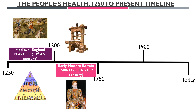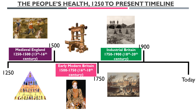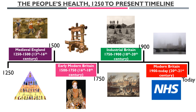The second time period is early modern Britain: 1500 to 1750, the 16th to the 18th century. The third is industrial Britain, from 1750 to 1900, the 18th to the 20th century. And finally, we have modern Britain, which is 1900 to today — the 20th to the 21st century.